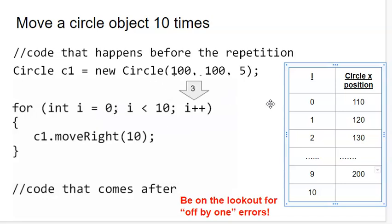Now, at first, when i is equal to zero, i is equal to zero is that first run through. So when i is equal to zero, we check it against the condition. Yes, zero is less than ten. So then we would move that circle object ten to the right and then increment the i value by one.